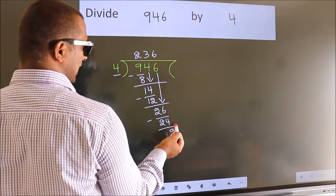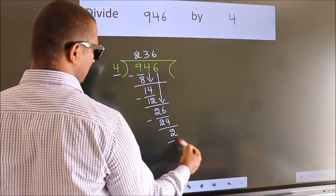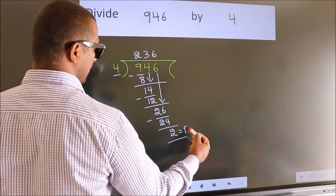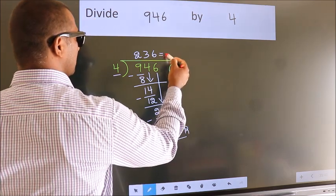No more numbers to bring it down. So we stop here. This is our remainder. This is our quotient.